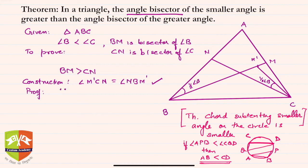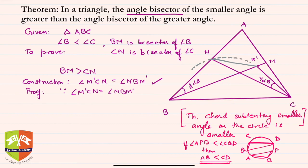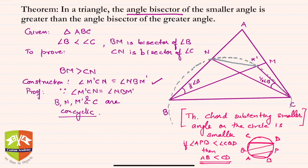Since angle M'CN is equal to angle NBM, if we join M'N, it looks like M'N is a chord subtending equal angles at two different points B and C. This means B, N, M', and C are concyclic — that is, they all lie on the same circle, because M'N is a chord subtending equal angles at B and C on the same side.